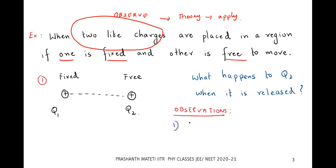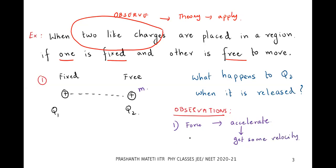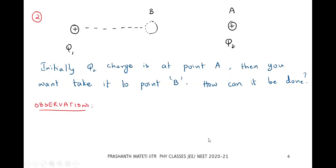When they repel each other, q2 experiences a force. Because of this force, if you have some mass and there is a net force acting on it, the body will accelerate. Because of this acceleration, it is going to gain some kinetic energy. So the observation is: we just placed it there and left it, and it gained kinetic energy. Where did this energy come from?